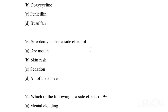Streptomycin has a side effect of: Option A: Dry mouth. Option B: Skin rash. Option C: Sedation. Option D: All of the above. The side effect of Streptomycin is Option B, Skin rash.